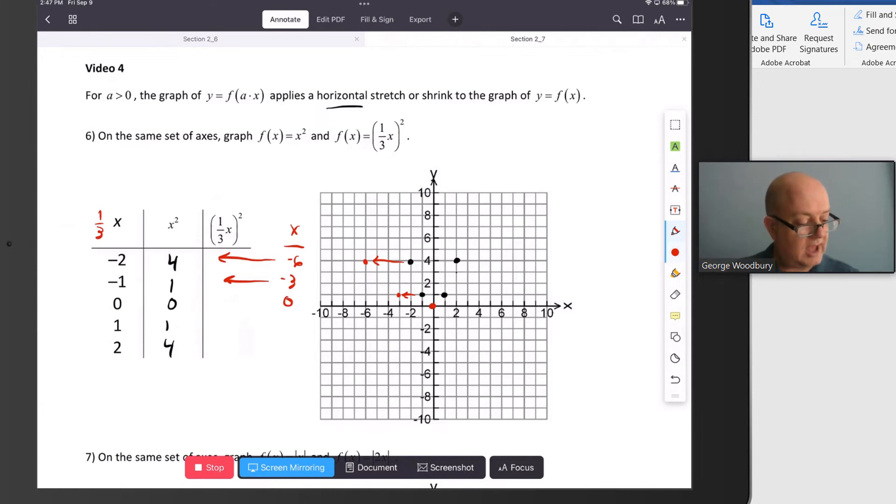Zero, zero is still going to be the same. When x is three, we get a result of one. Again, being pulled towards the outside, stretching this graph out. And finally, when x is six, we get a result of four.